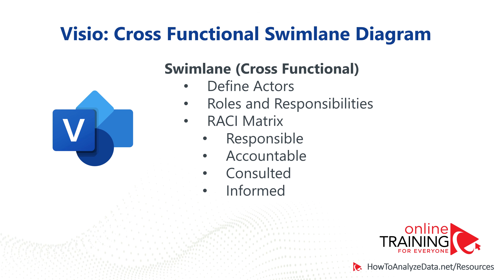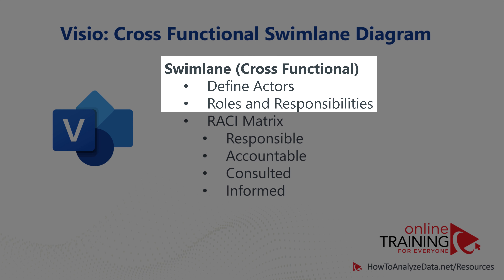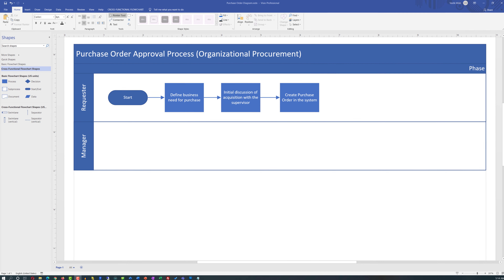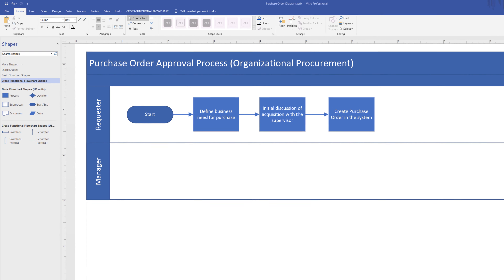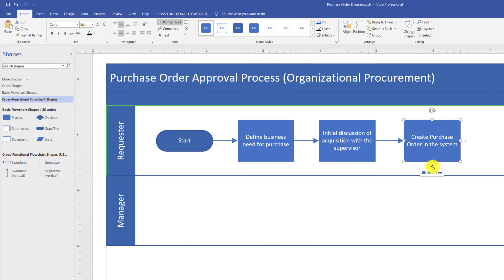There are three main scenarios for using a cross-functional swim lane diagram: when you need to define specific actors, when you need to define roles and responsibilities, and the combination of both — as organizations frequently use RACI matrices to define who is responsible, accountable, consulted, and informed. After an order is created in the system, the direct supervisor needs to approve it — shown as a step in a separate swim lane.